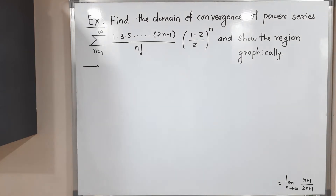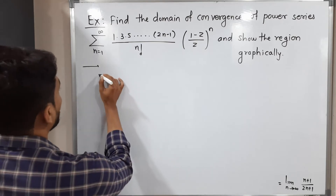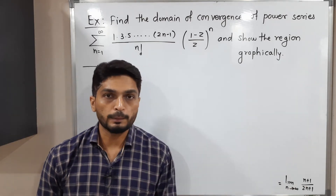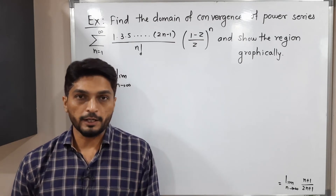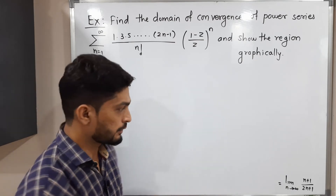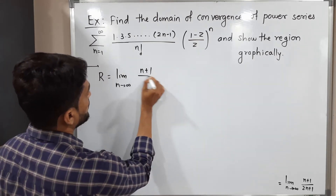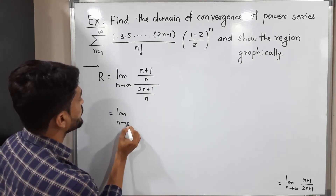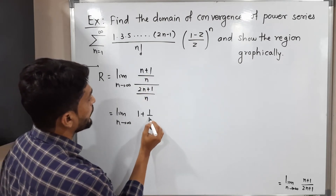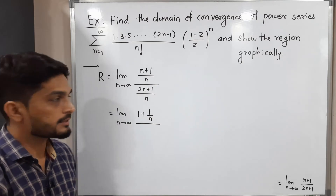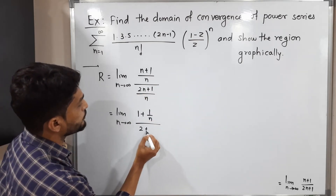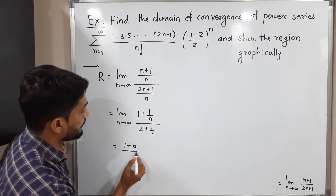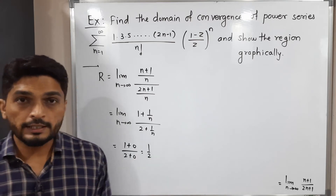To evaluate the limit of (n+1)/(2n+1) as n tends to infinity, divide numerator and denominator by n: (1 + 1/n) / (2 + 1/n). As n tends to infinity, 1/n tends to 0, giving (1+0)/(2+0) = 1/2. So the radius of convergence R equals 1/2.